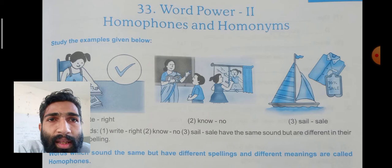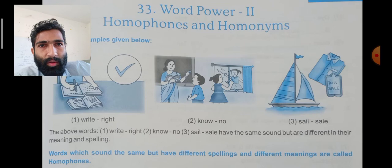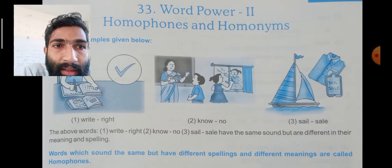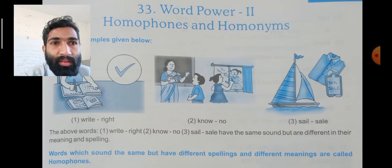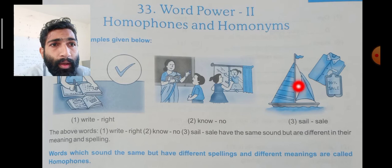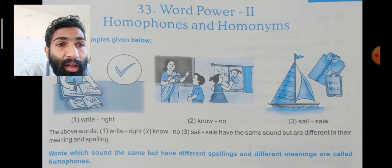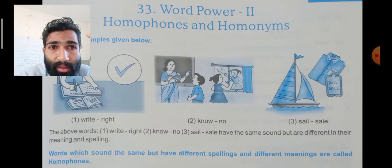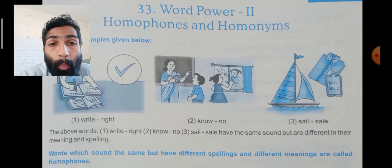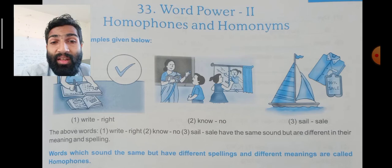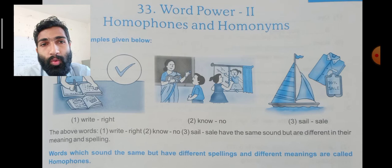Study the examples given below. One is 'right' — writing with a pen. Another 'right' means correct. Then 'no' — getting some knowledge, that is 'know', and another 'no' means saying no. Then 'sale' — the water sail, and another 'sale' means selling something. The words right, right, no, no, sale, sale have the same sound but are different in spelling and meaning. Words which sound the same but have different spellings and different meanings are called homophones.